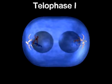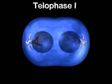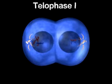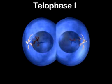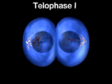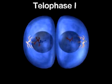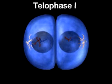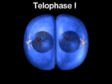During telophase I, the spindle is broken down, the chromosomes uncoil, and the cytoplasm divides to yield two new cells, each with half the number of chromosomes.